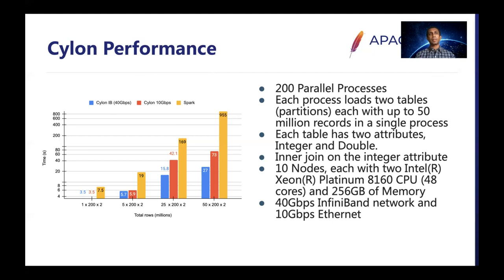This is primarily because of the limitations of Java — more objects means more garbage collections. Also at this level, Spark cannot keep things in memory and needs to use external storage. Cylon can comfortably work with the available memory because it uses a compact format to keep things in memory. Also, compared to Spark, Cylon could utilize the InfiniBand network and achieve the best performance possible in this setup.